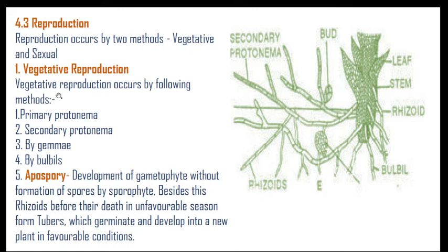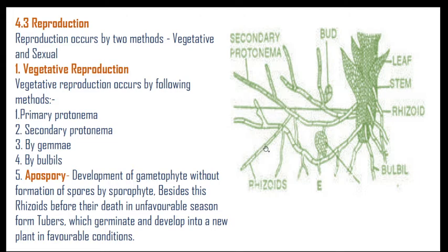Reproduction occurs by two methods: vegetative and sexual. Vegetative reproduction occurs by primary protonema, secondary protonema, gemmae, and bulbils. The main thallus of Funaria develops many rhizoids, and on those rhizoids there is development of secondary protonema, which can directly develop into a new Funaria plant. They also possess bulbils that can again develop into a new plant. Buds and bulbils also get converted into new plants.